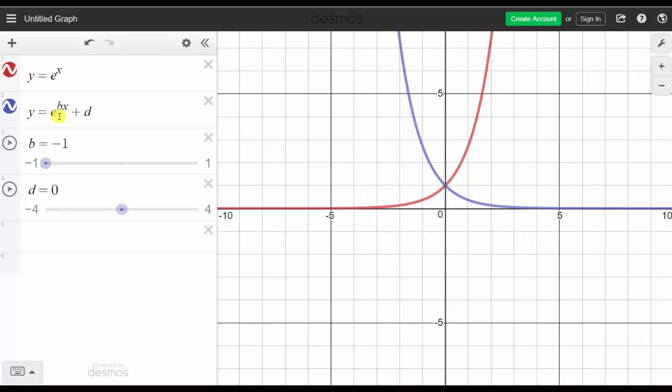And now let's change d to three, which will shift the blue graph up three units, because all the function values or y values are being increased by three. So the blue graph is a graph of y = e^(-x) + 3, which again can be created by reflecting y = e^x graphed in red across the y-axis and then shifted up three units.